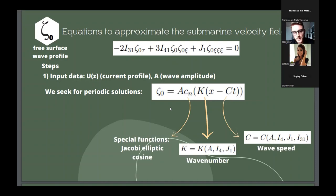So, we have solutions in this shape. The zeta zero will be a function that depends on the amplitude, spatial functions, known as Jacobi elliptical sine, the wave number, the wave speed. And this wave speed depends on the constants given by integrals.